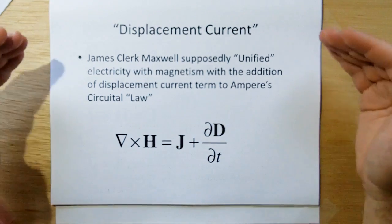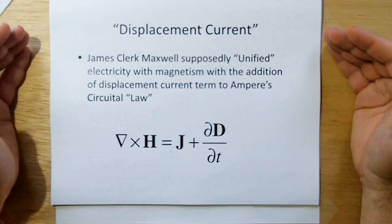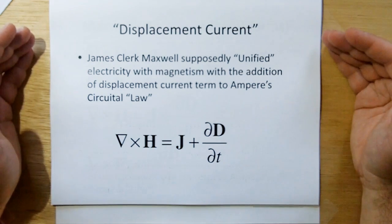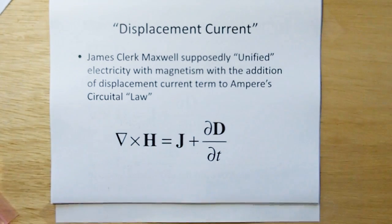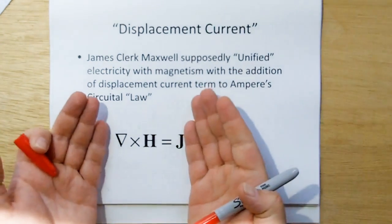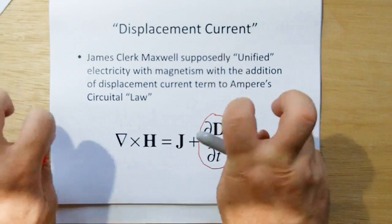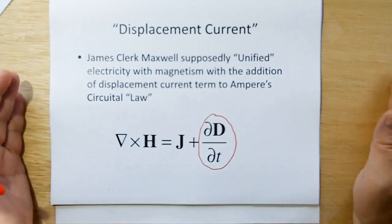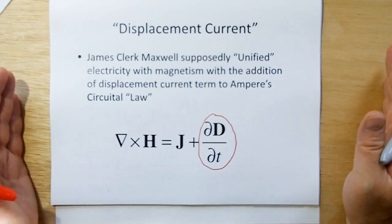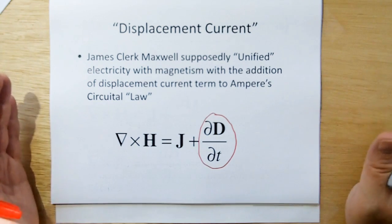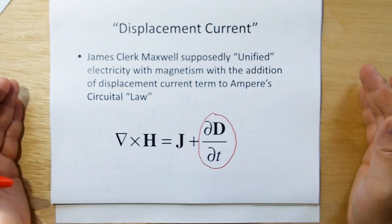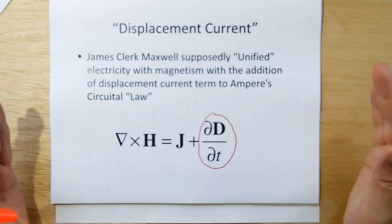Displacement current is the assumption that James Clerk Maxwell made in order to unify electricity with magnetism. The displacement current term is this guy here, because before Maxwell did this, there was just this, which was Ampere's Circuital Law. I use law in quotes because we really shouldn't be calling mathematical models laws, they're not laws, they weren't handed to us by God on stone tablets. They're just our ability as humans to mimic nature with mathematics. That's all they are, is mimics of nature.